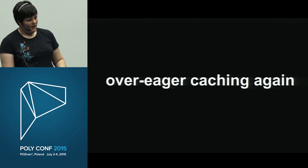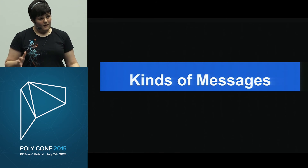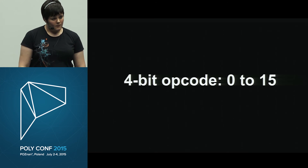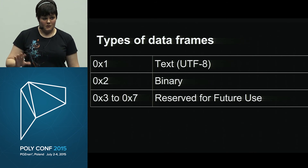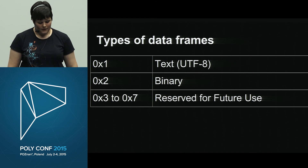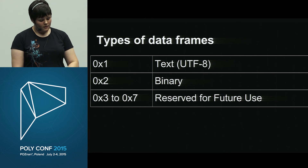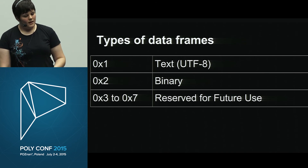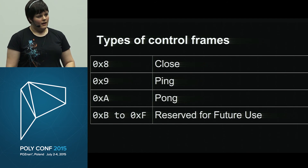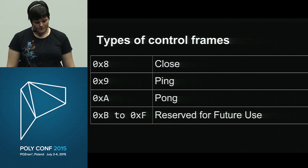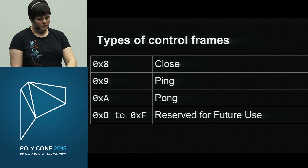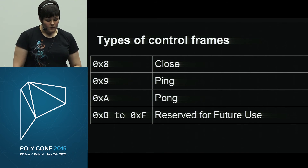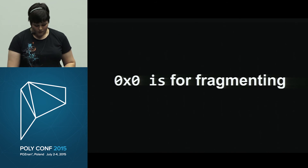Let's talk about the different kinds of messages — the opcodes. There are 16 possible values, 0 to 15. Data frame opcodes: 1 for text (must be UTF-8), 2 for binary (arbitrary binary blob). If you don't want UTF-8, just send a binary blob. Opcodes 3–7 are reserved for future data frames. Control frames all start with 1 as their high-order bit: 8 is close, 9 and 10 are ping and pong. Opcodes 11–15 are reserved for future control frames. Opcode 0 is for continuation frames used in fragmentation.